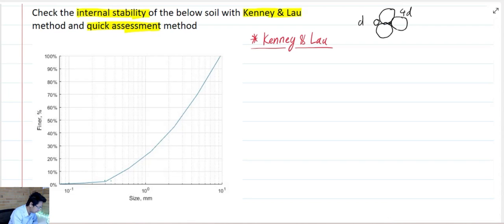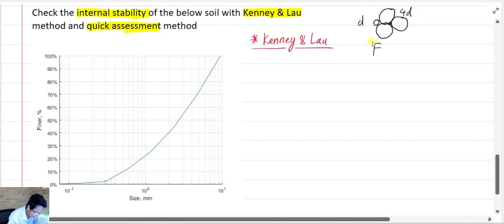Therefore, Kenny tries to check for the fraction F of particle size D and the fraction H of particle size 4D. And if your H over F is larger than 2.3, that means you have enough particles of size 4D to keep the particle of size D in place and this size is going to be safe.